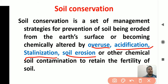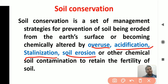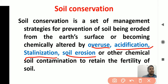Soil conservation is basically applied to reduce soil loss from the earth surface by applying different measures — agronomic measures, agrostological measures like applying various grasses on the earth surface to reduce soil loss, and forestry measures like shelter belts and different windbreak areas.